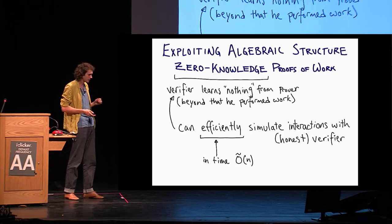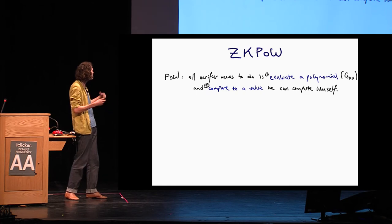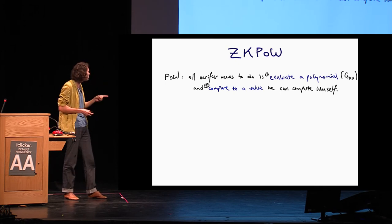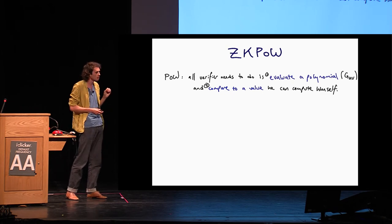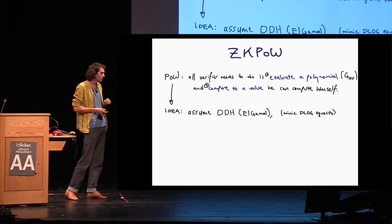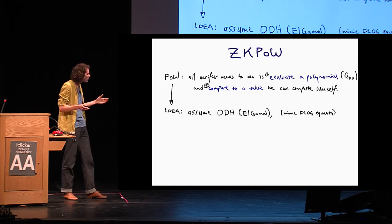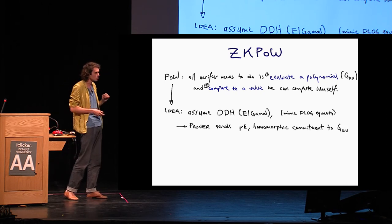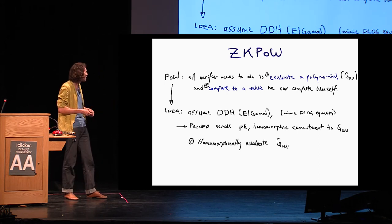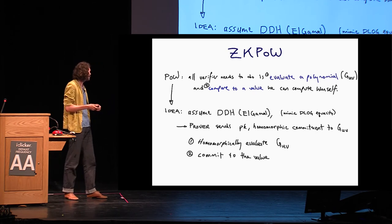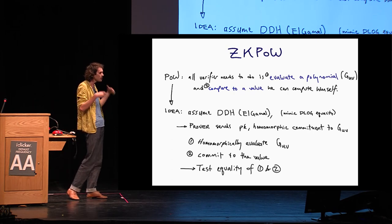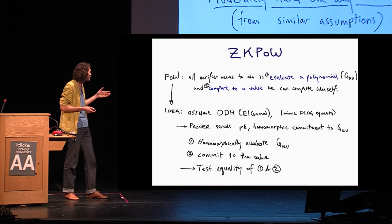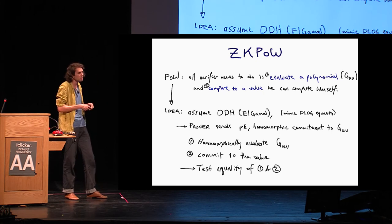So he's really not learning anything. And how would we do this very roughly? Recall that our proof of work scheme, all the verifier needs to do is evaluate this univariate polynomial and compare it. Okay, I didn't tell you this explicitly, but he compares it to a value that he computes by himself efficiently. So the idea here is just to assume some DDH homomorphic commitment scheme, basically. The prover is going to send some public key and a commitment to this univariate polynomial. Then the verifier, instead of evaluating the polynomial in the clear, he evaluates it homomorphically. He commits to the value himself using the public key, and then we test the equality of these two things, which is old techniques. But we think that this indicates that there may be more applications to this sort of thing.